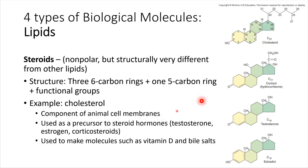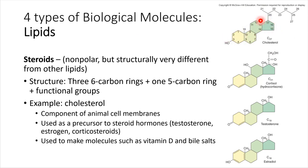Our last type of lipid to mention right now are the steroids. Steroids are nonpolar, in keeping with the characteristics of lipids, but other than that their structure is actually quite different. If you look at the structure, you'll notice the rings — all of the carbon rings involved. There are four carbon rings: three of them are six-carbon rings and the other one is a five-carbon ring, which is very characteristic of steroids.